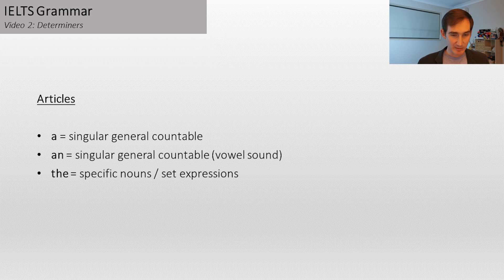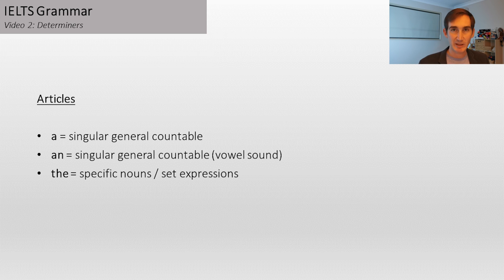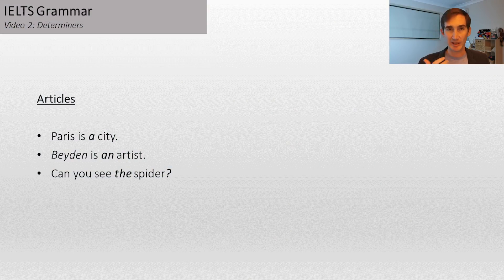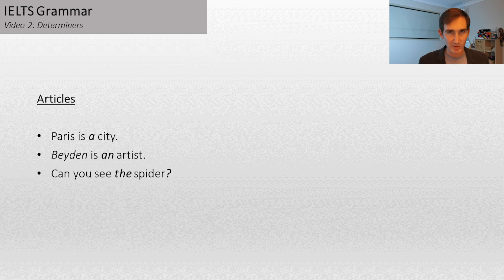The word 'the' goes with specific nouns and set expressions. When I say specific nouns, I mean the reader or the listener knows the one that I'm talking about. Let's dive into some examples. Here are three examples for articles: 'Paris is a city.' 'Baden is an artist.' 'Can you see the spider?' — the spider I'm looking at, you know the one that I'm talking about.